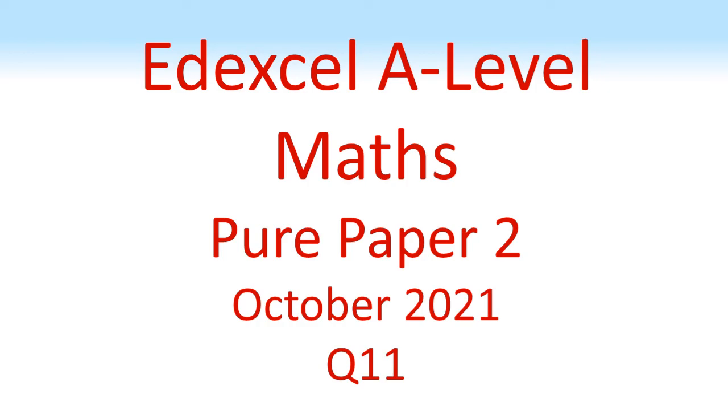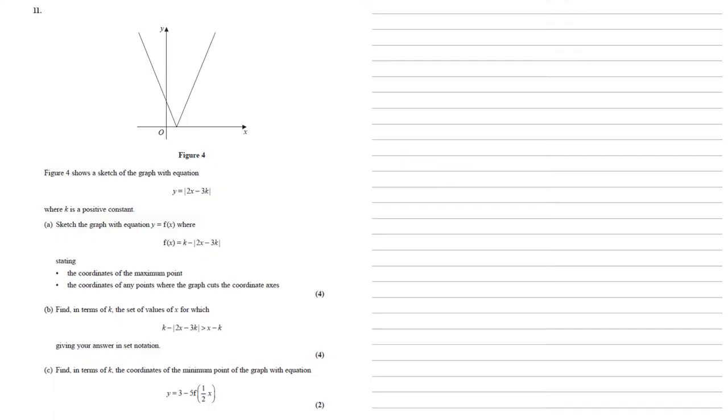Edexcel A-Level Maths, Pure Paper 2, October 2021, Question 11. Figure 4 shows a sketch of the graph with equation y equals modulus 2x minus 3k, where k is a positive constant.